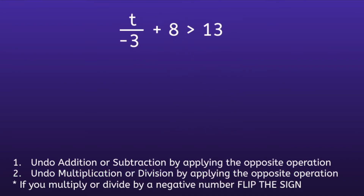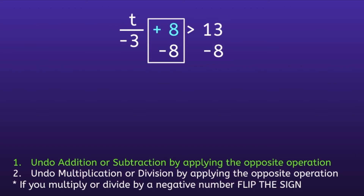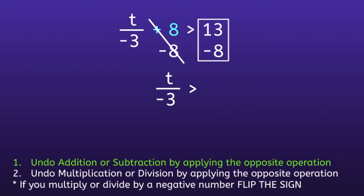Example number two: t over negative 3 plus 8 is greater than 13. Step one, undo addition or subtraction by applying the opposite operation. Do you see addition or subtraction in our inequality? I see addition, and we are adding 8. So we want to do the opposite on both sides of the inequality sign, and the opposite of adding 8 is subtracting 8. On the left side, 8 minus 8 is 0, so we can cancel those out, and we bring down t over negative 3 and the inequality sign. On the right, 13 minus 8 is equal to 5.